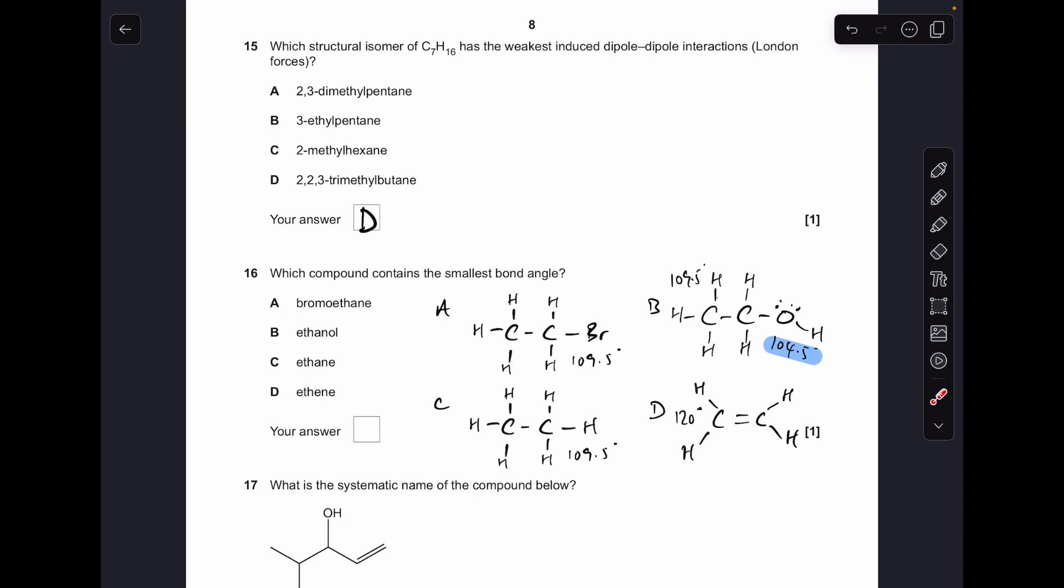Number sixteen: I've just drawn them out to help explain. In A and C, all tetrahedral, so 109.5 degrees. D, you've got trigonal planar around the carbon, so that's 120. In B you've got two angles: you've got the tetrahedral part and you've also got the smaller angle, 104.5 degrees, on the OH around the O because of the two lone pairs on the oxygen. So that's your smallest angle, so B was the answer.